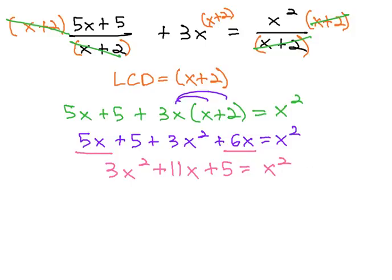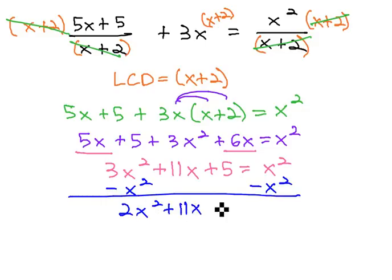When there is an x² in the problem, we want it to equal 0 so we can factor. So, let's subtract x² from both sides, giving us 2x² + 11x + 5 = 0.